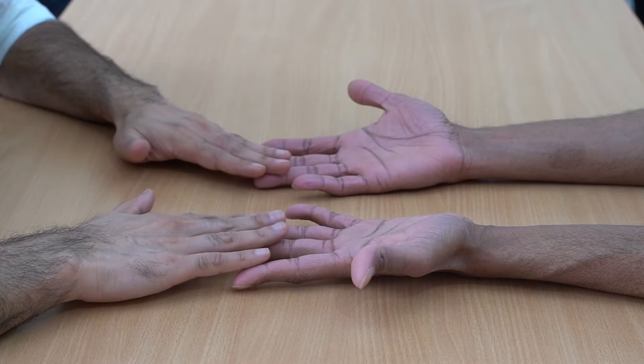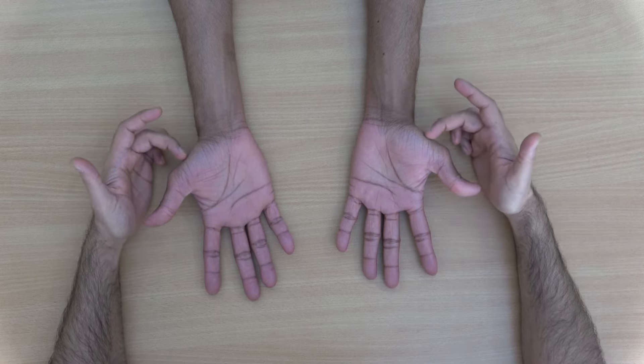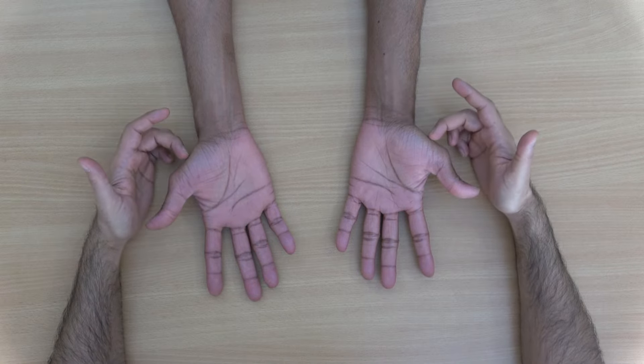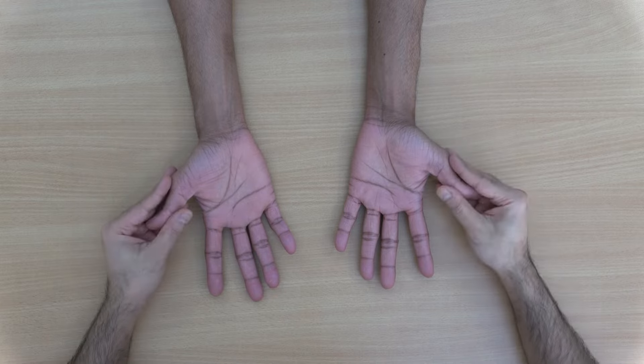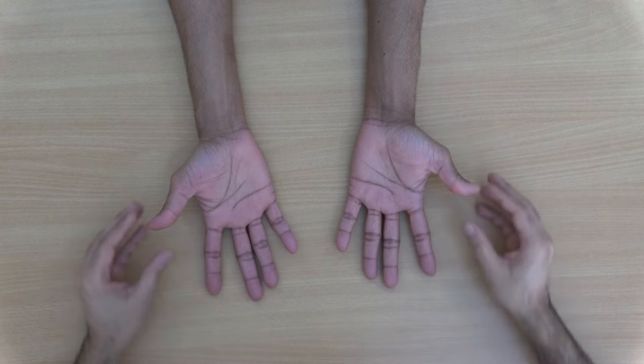The second pathology that we look at is arthritis of the base of the thumb. It's very commonly seen. In this inspection we're going to look for general signs of arthritis in the hand.